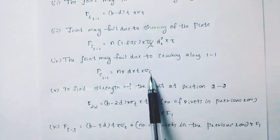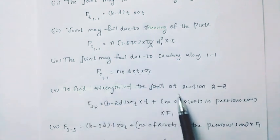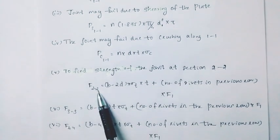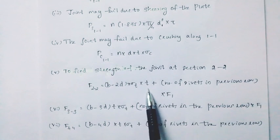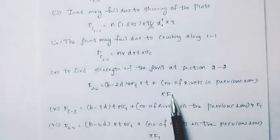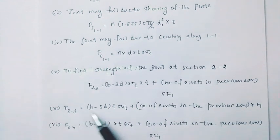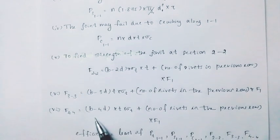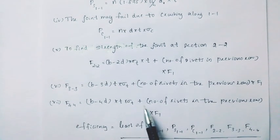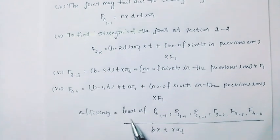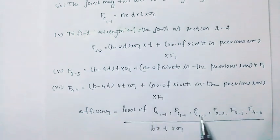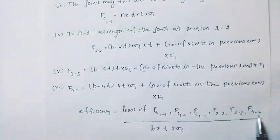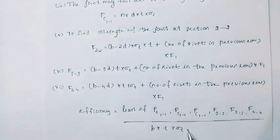The joint may fail due to crushing along 1-1: PC1 equals N into D into T into sigma C. To find strength at section 2-2: F2-2 equals B minus 2D into sigma T into T, plus number of rivets in previous row into F1. Then F3-3 equals B minus 3D into T into sigma T plus number of rivets in previous row into F1. Then F4-4 equals B minus 4D into T into sigma T plus number of rivets in previous row into F1. Efficiency equals the least of these values divided by B into T into sigma T.